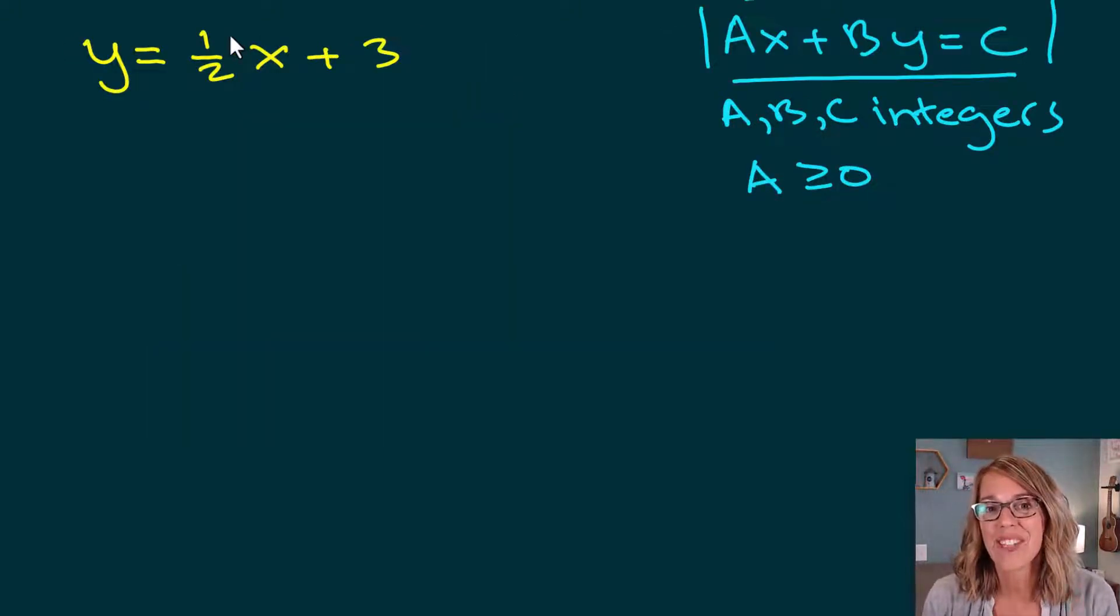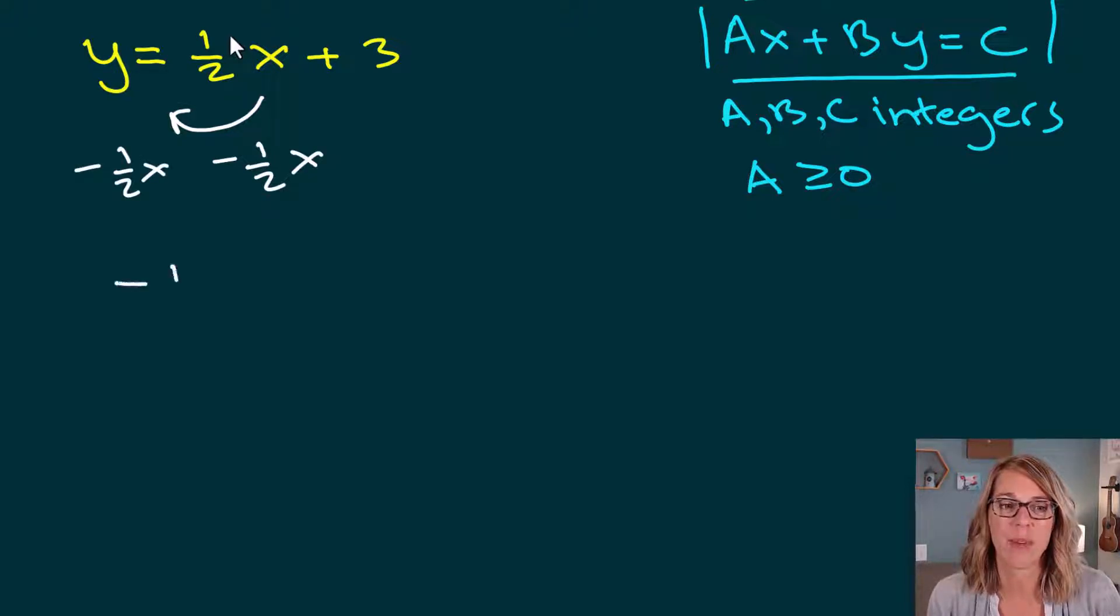So in the second one, I again have slope intercept form. I need to move this 1 half x to the other side. So I'm going to subtract that 1 half x. And this gives me y minus 1 half x, but I'm going to put the 1 half x first. So negative 1 half x plus y is equal to a positive 3.